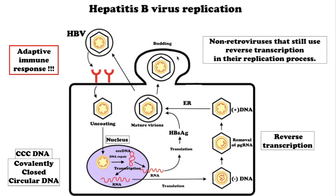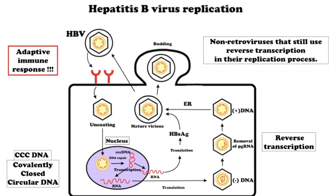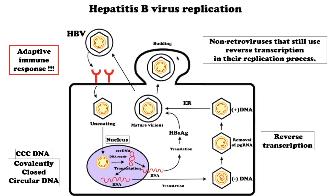During HBV infection, the innate immune response does not play a significant role. The adaptive immune response — in particular virus-specific cytotoxic T lymphocytes — contributes to most of the liver injury. Cytotoxic T lymphocytes eliminate HBV infection by killing infected cells and producing antiviral cytokines.